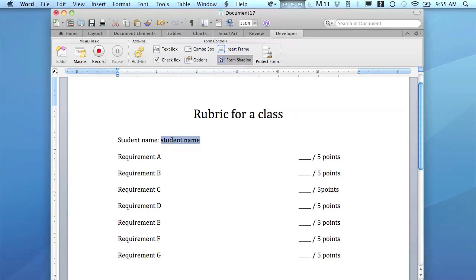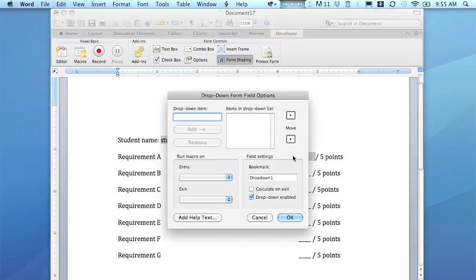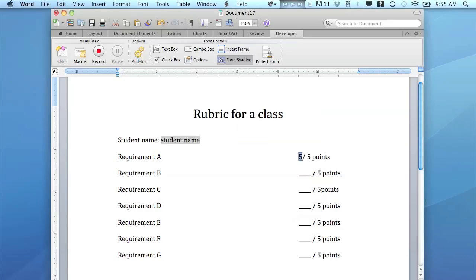Now for where it says Requirement A and it has the space and then out of five points, I want to double-click that and now I'm going to click on Combo Box. A combo box lets us make a dropdown menu. Here I'm going to show you this one. Just double-click it and here it says dropdown item. So I'm going to type in 5, 4, 3, 2, 1, 0, because those are the possible points. Click OK. And now I'm going to speed this up here so you can see it a little faster.